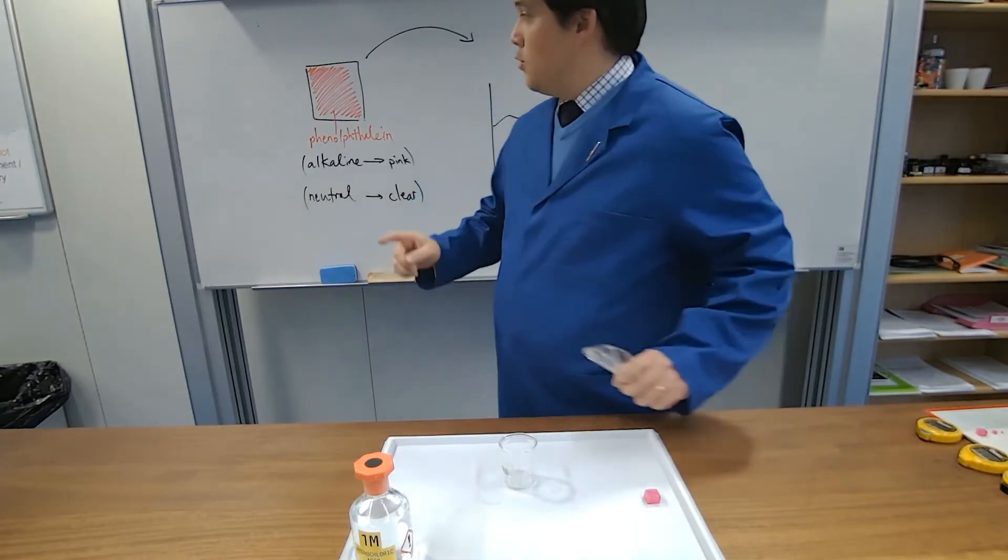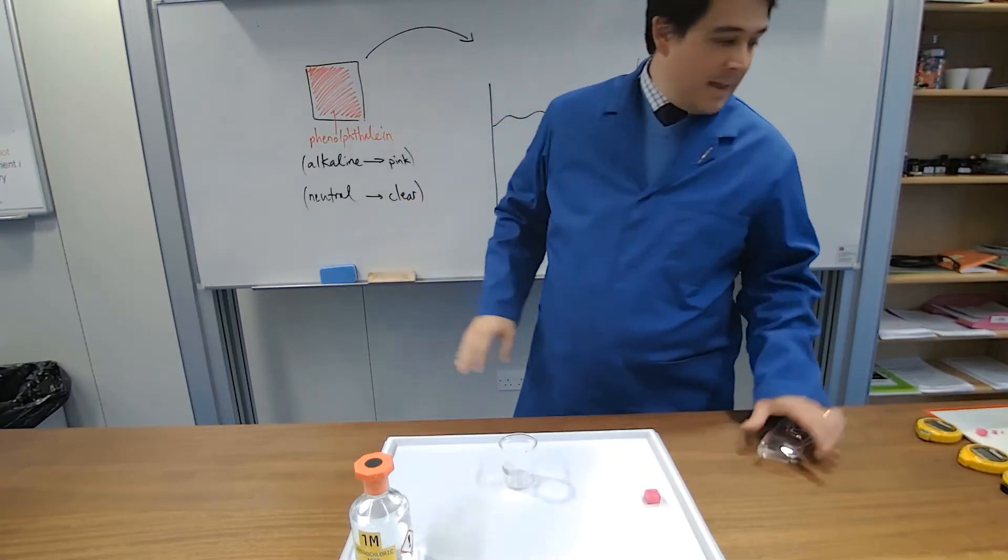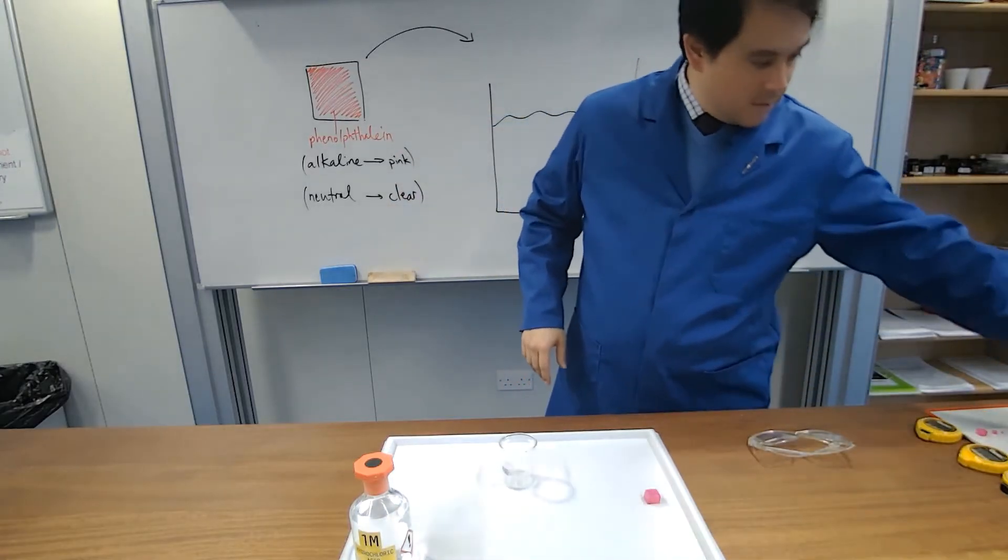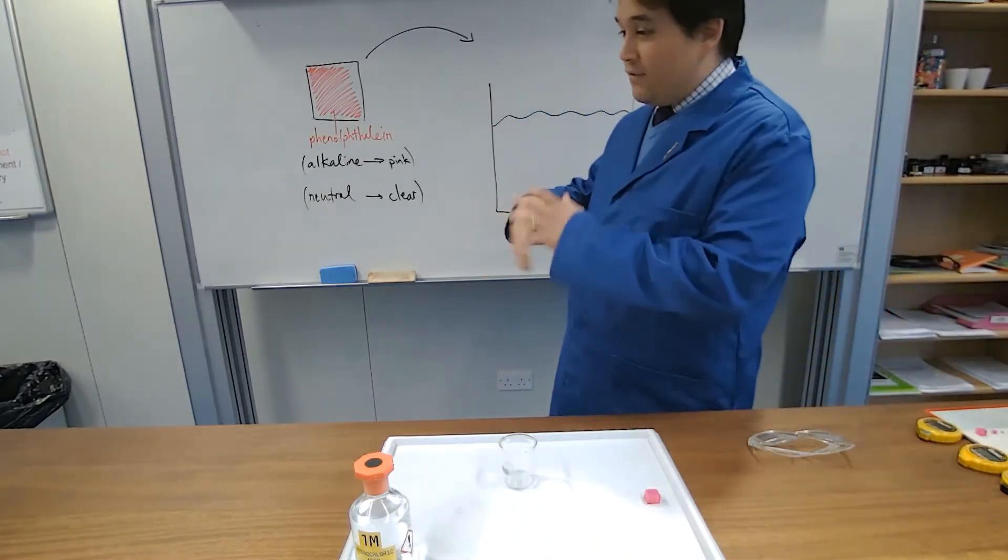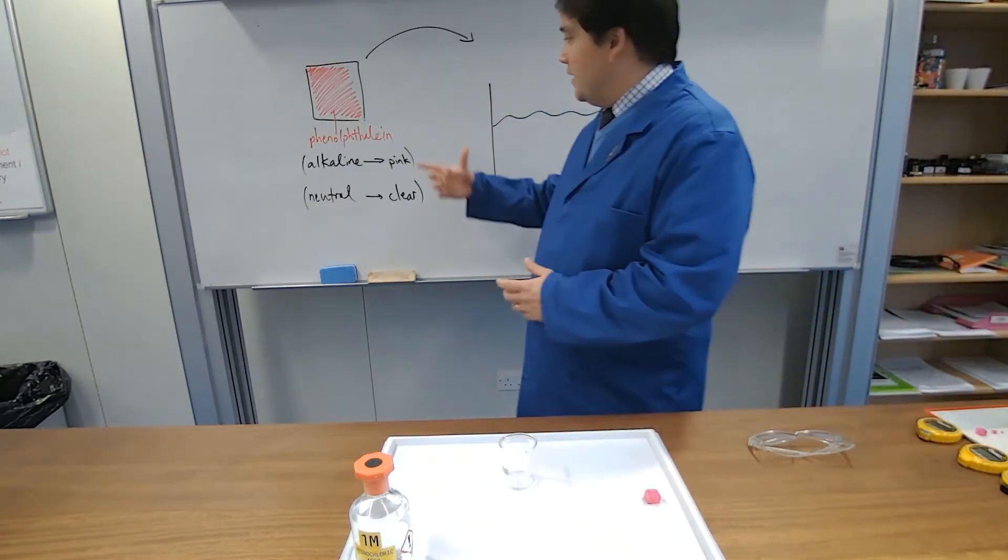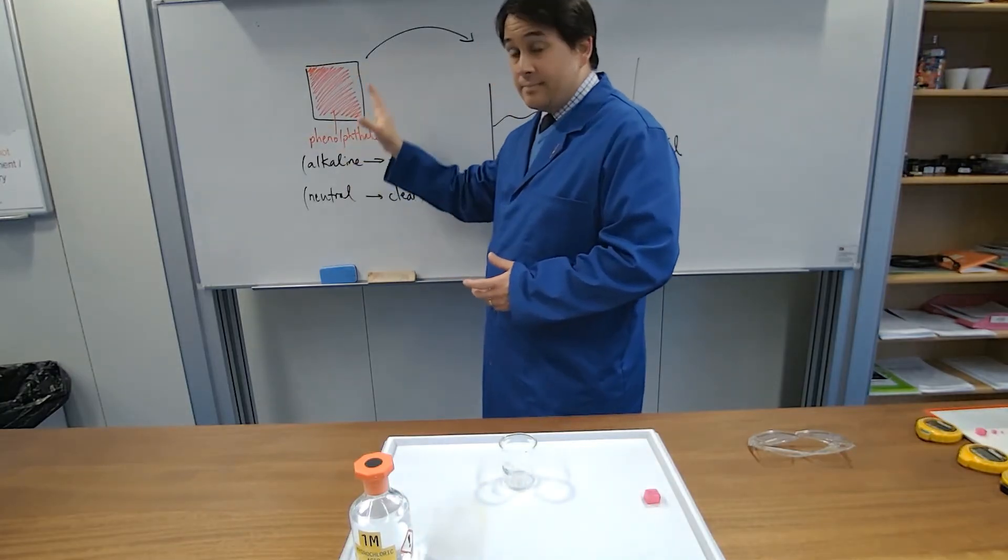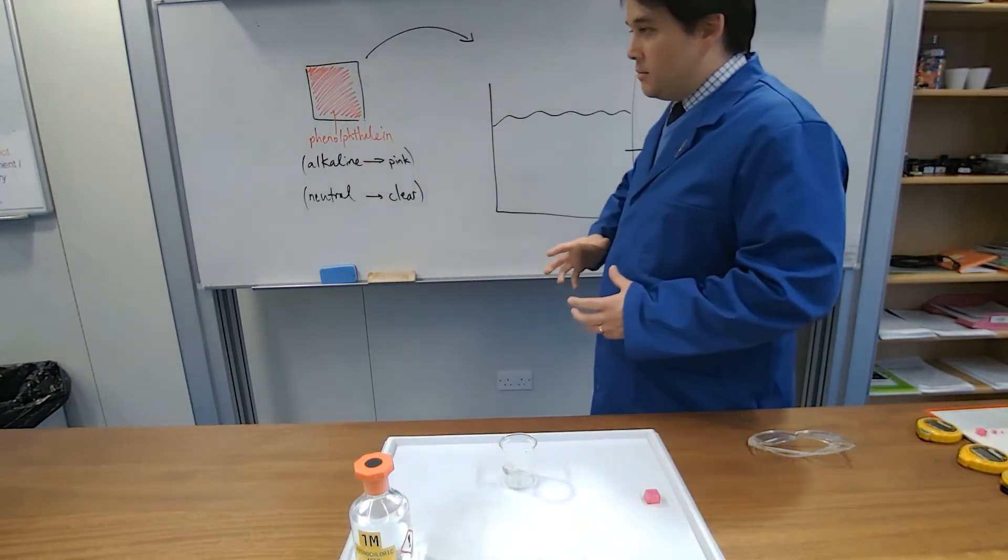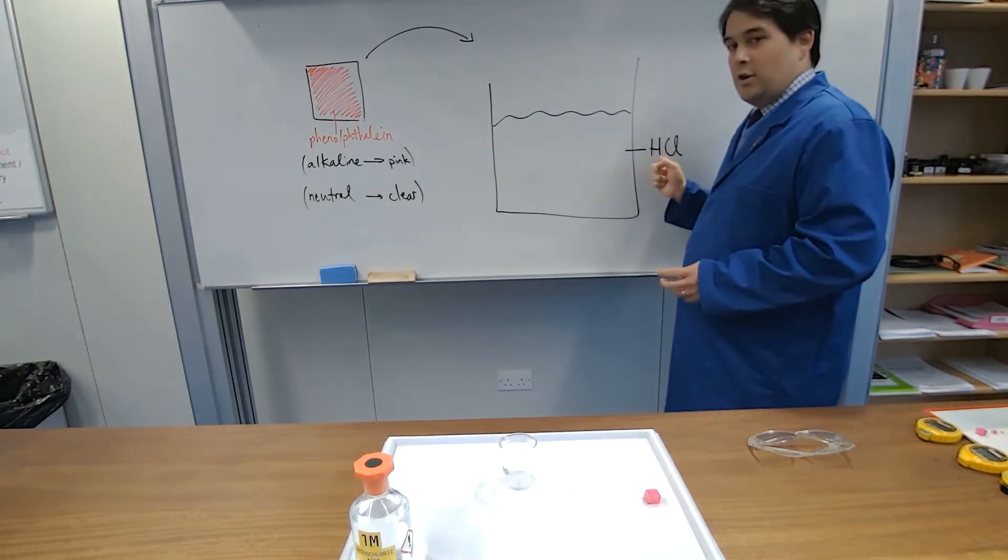With that in mind, we are going to look at an agar cube, which is basically a sort of jelly made from seaweed protein. We've filled it with an indicator called phenolphthalein, which turns pink when it's alkaline. We are then going to put it into a beaker full of hydrochloric acid.